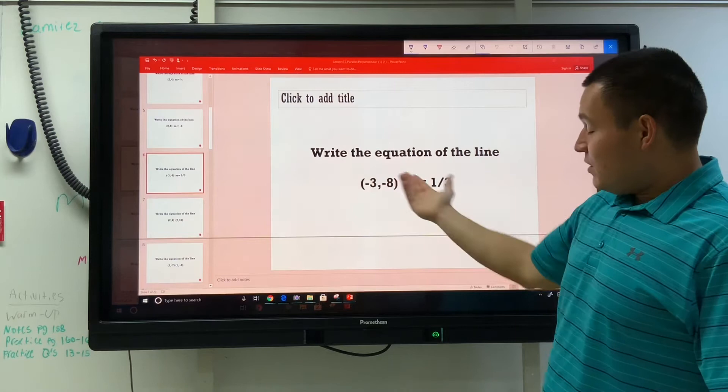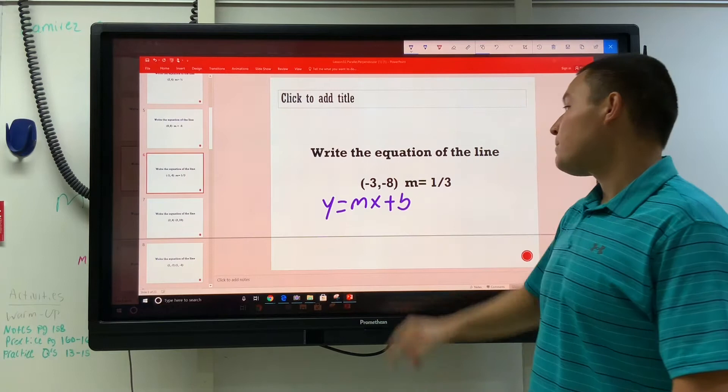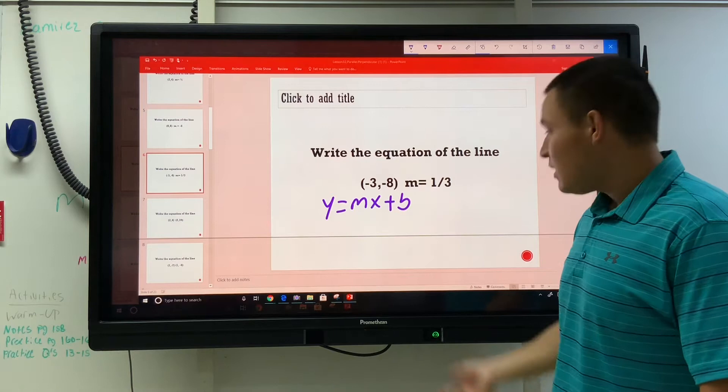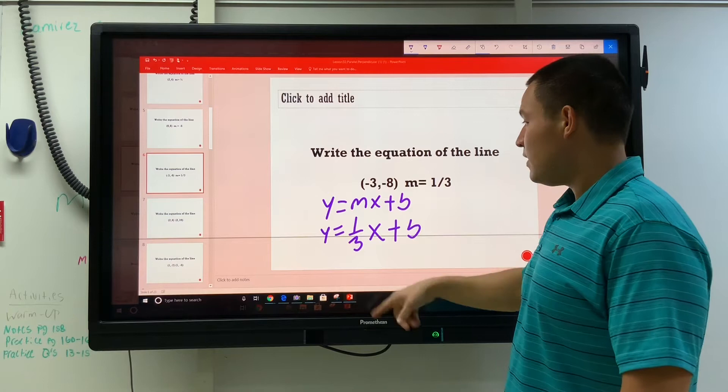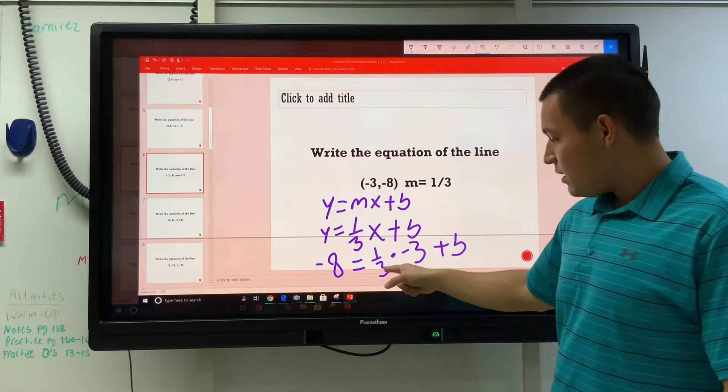Write the equation of this, given that negative 3, negative 8 is on the line, and this is the slope. Write that in y equals mx plus b form. That means y is equal to 1 3rd x plus b, then we take these numbers, put y for y, x for x, so times negative 3, plus b.